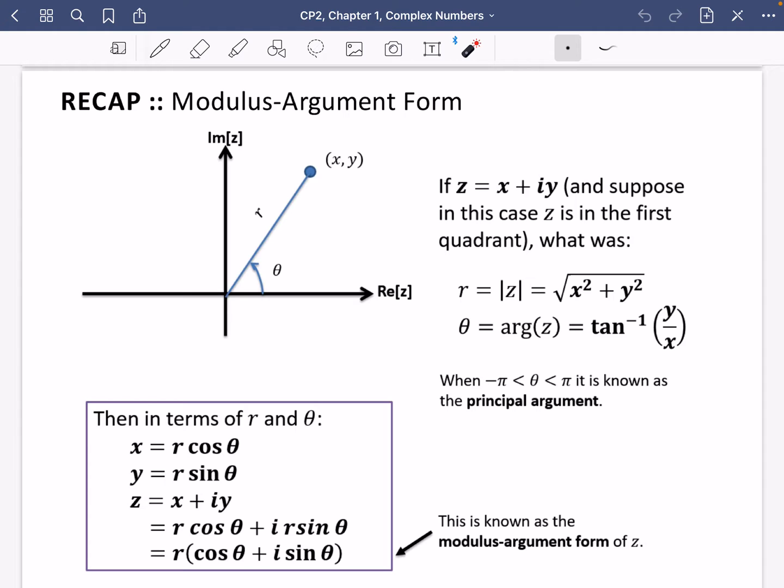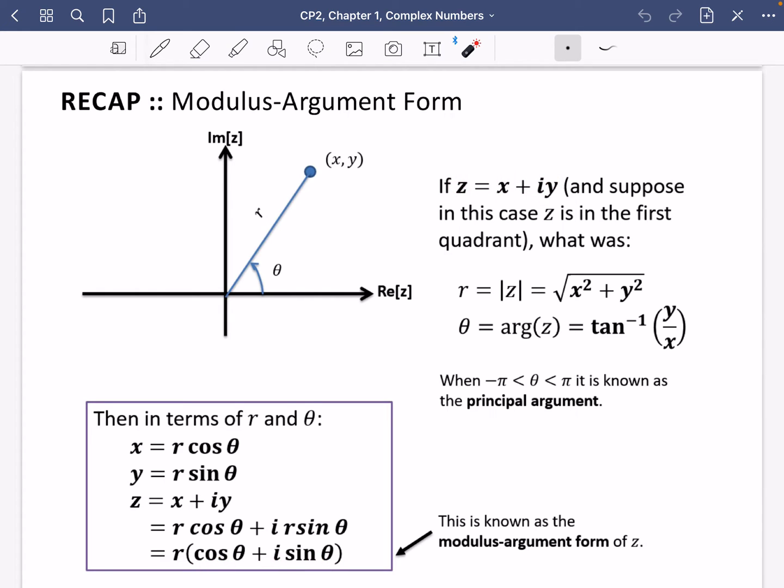In terms of r and theta, we can use our knowledge of triangles to say that the x coordinate, because it's adjacent to the angle, is r cos theta. The y coordinate is r sine theta. So Z being equal to x plus iy is just r cos theta plus ir sine theta, which when you factorize it, is just r times (cos theta plus i sine theta). This is known as the modulus argument form.